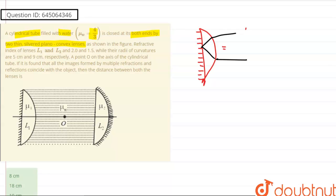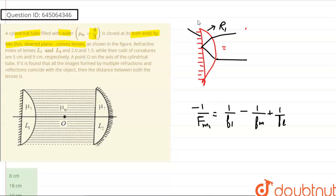Using lens-mirror equivalence: −1/fM1 = 1/f_lens − 1/f_mirror + 1/f_lens. Let us call the radius of curvature for the curved surface R1, and for the plane surface it would be infinite. So −1/fM1 = 2/f_lens, and the mirror term becomes 0.